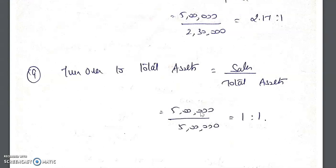This type of sum gives all details so you can find out multiple ratios at once. Sometimes they directly ask for specific ratios — liquidity ratios, profitability ratios, activity ratios, or proprietary ratios. Other times they simply ask you to calculate all possible ratios from the given data, in which case you find out whatever ratios are computable from the information provided.